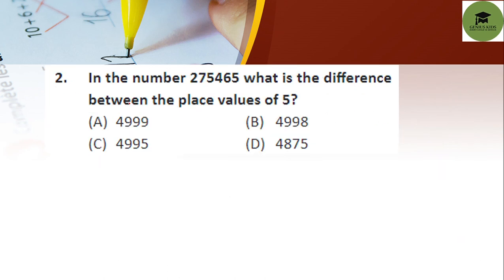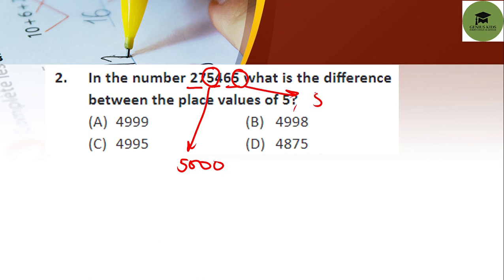Next question: in the number 275,465, what is the difference between the place values of the two 5s? The place value of the first 5 is 5,000 and the place value of the second 5 is 5. The difference between 5,000 and 5 is 4,995. So option C is your correct answer.